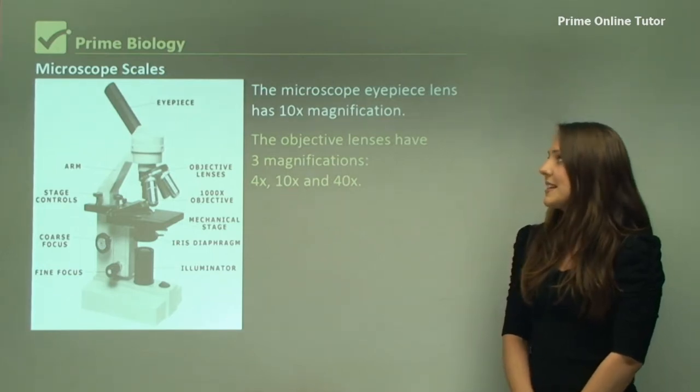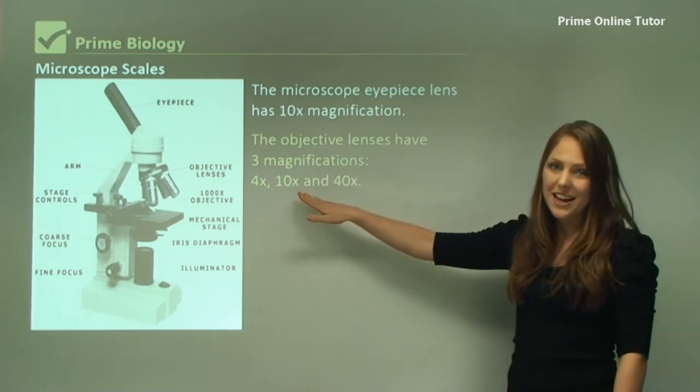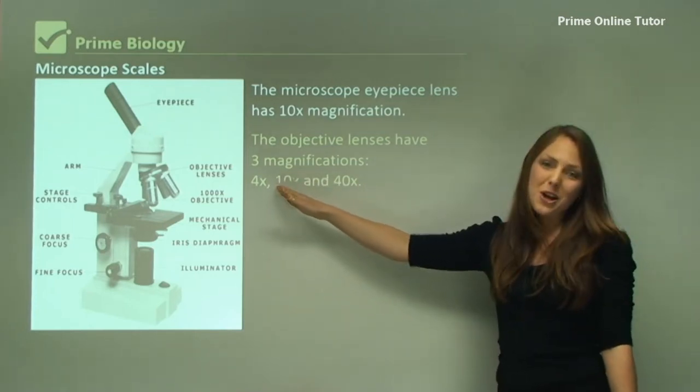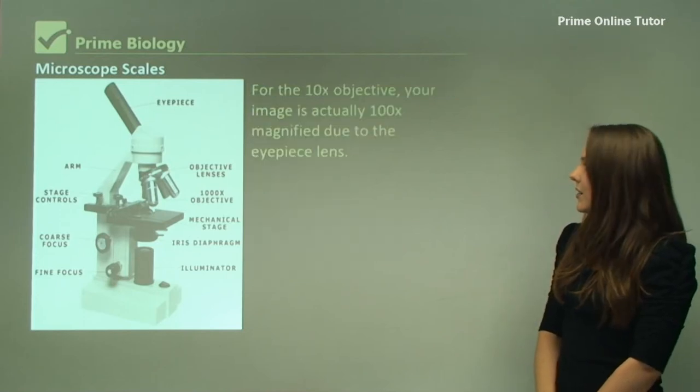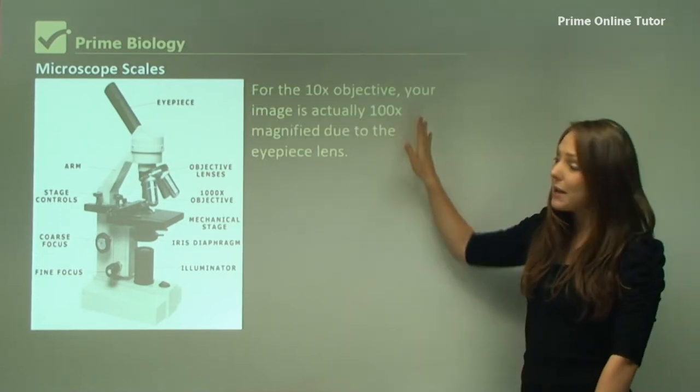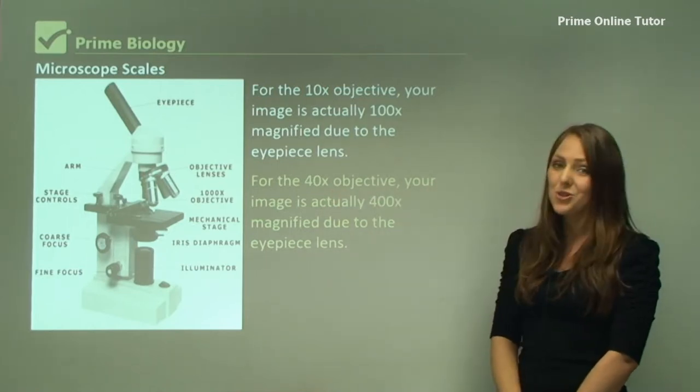The microscope eyepiece lens has 10x magnification, and each lens has three magnifications, as I've already mentioned, 4x, 10x, and 40x. For the 10x objective, your image is 100x, and for the 40x objective, your image is 400x.